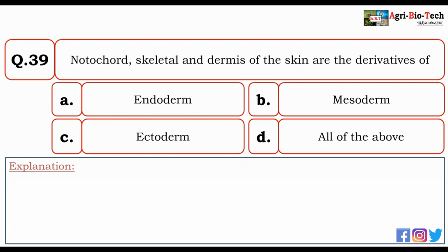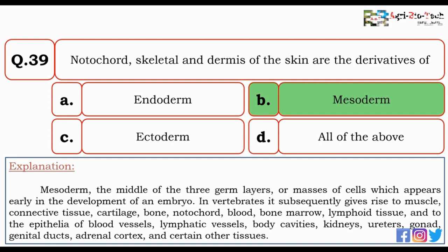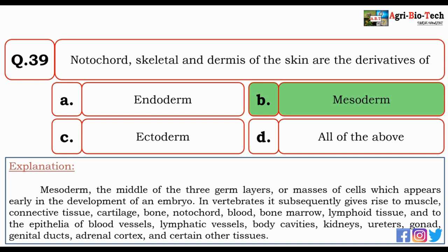Next question: notochord, skeletal tissue, and dermis of the skin are derivatives of — endoderm, mesoderm, ectoderm, or all of the above? The correct option is B — mesoderm. Mesoderm is the middle of the three germ layers appearing early in embryo development. In vertebrates, it gives rise to muscle, connective tissue, cartilage, bone, notochord, blood, bone marrow, lymphoid tissue, and epithelia of blood vessels, lymphatic vessels, body cavities, kidneys, uterus, gonads, genital ducts, and adrenal cortex.